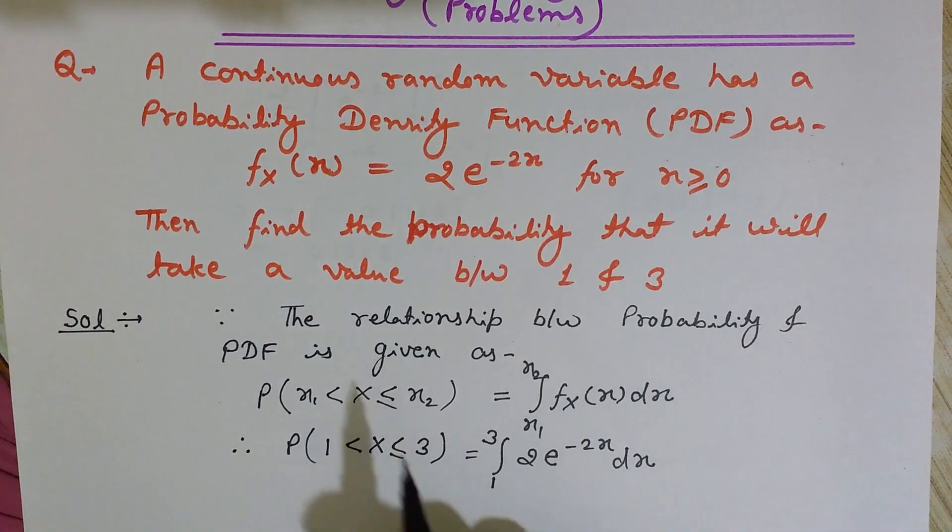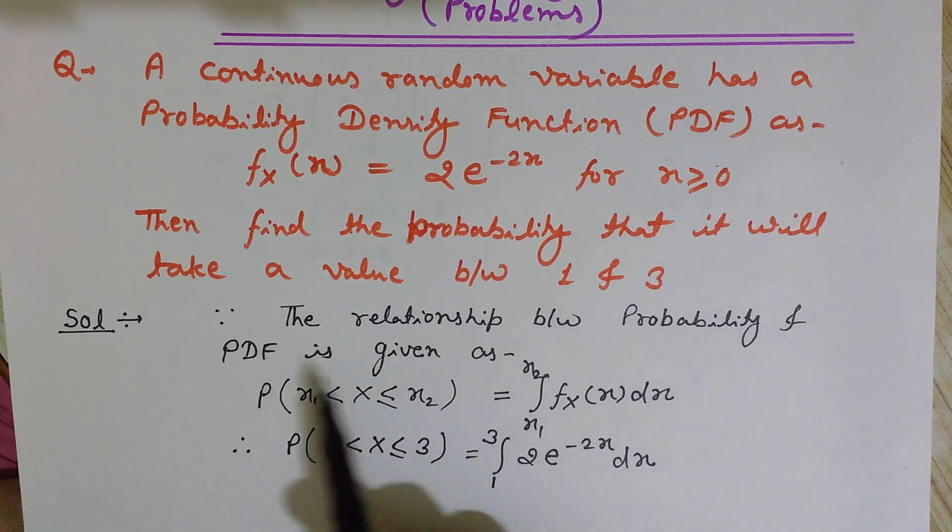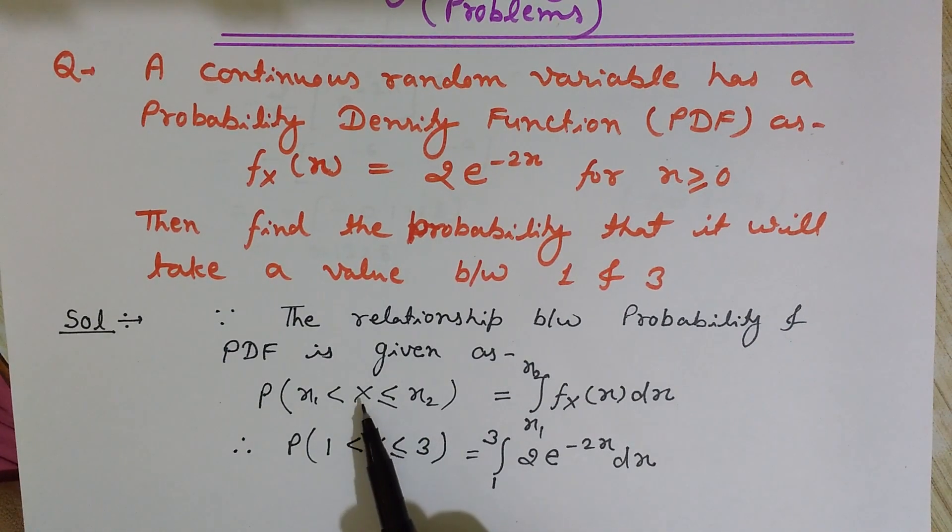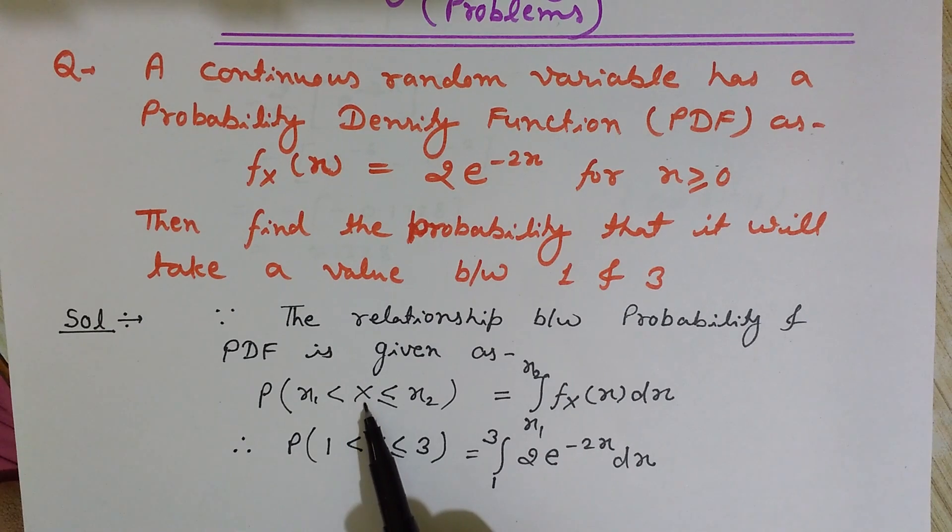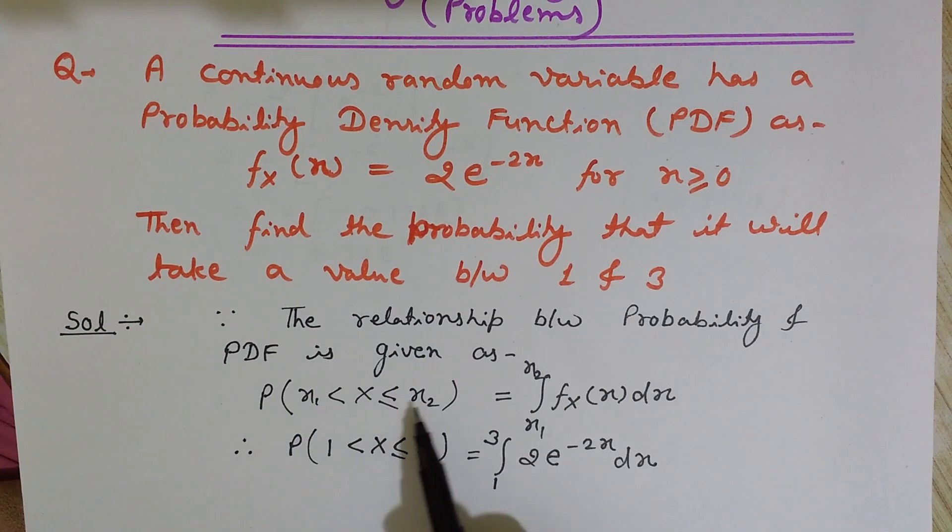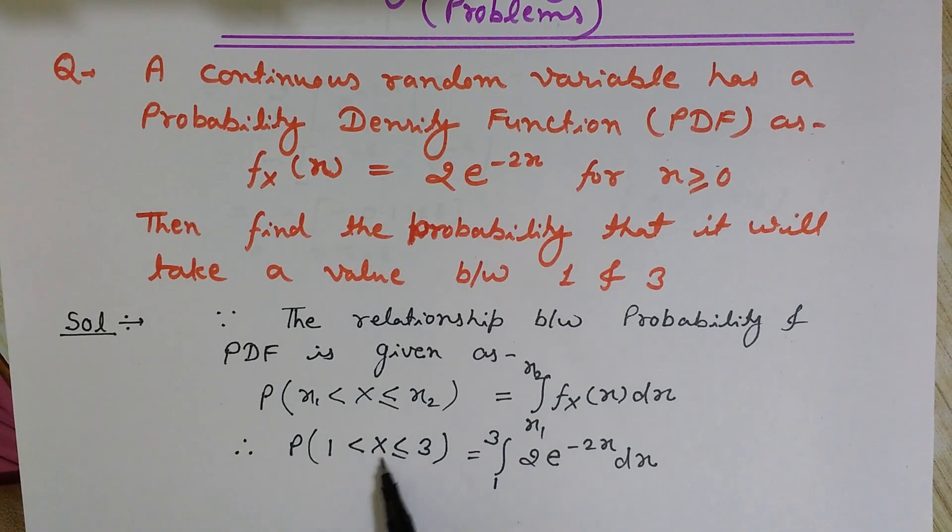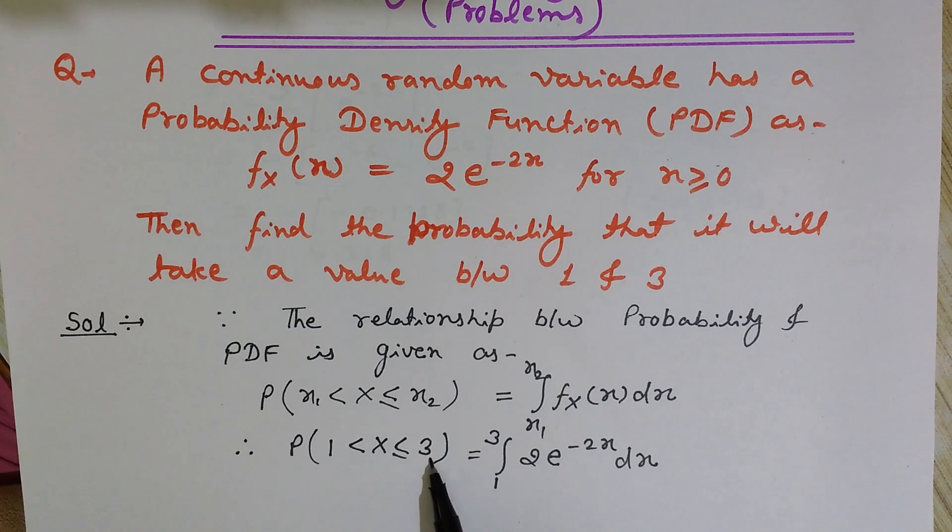This is the basic relationship between probability and probability density function. What is the probability that the random variable X—capital X is a random variable—lies between x1 and x2? We need to find its probability. In our question, what is the probability that this random variable x lies between 1 and 3?